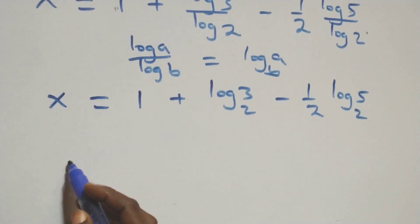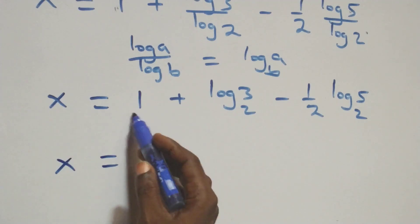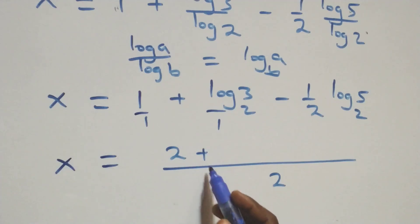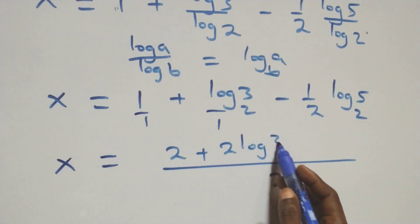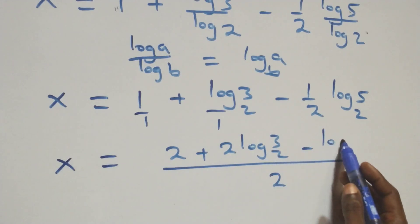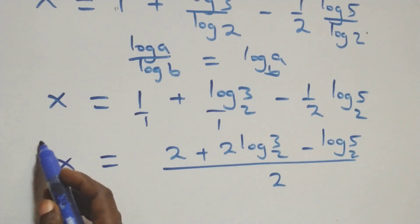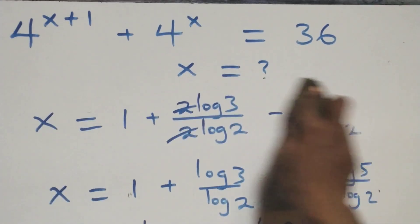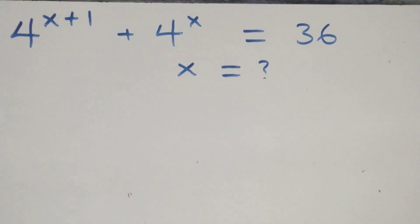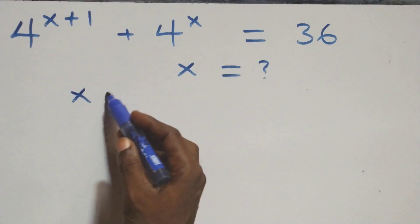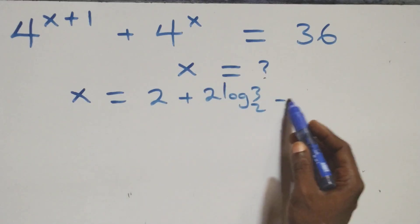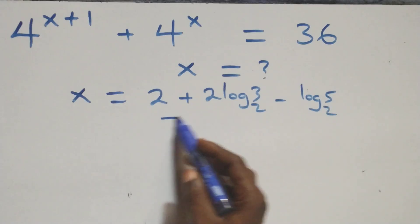Combining over a common denominator of 2, this becomes 2 plus 2 log₂3 minus log₂5, and we have x equals 2 plus 2 log₂3 minus log₂5, all over 2. That is the value of x. Let's check if this satisfies the given problem.